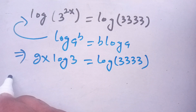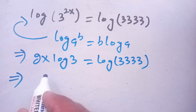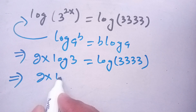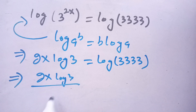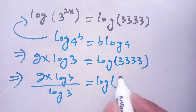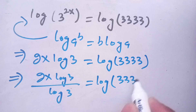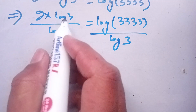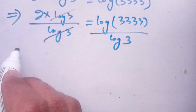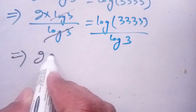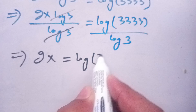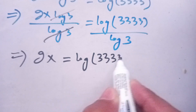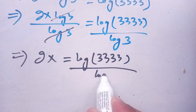Now, dividing both sides by log of 3, we get 2x times log of 3 divided by log of 3 is equal to log of 3333 divided by log of 3. We can cancel out log of 3, which gives 2x is equal to log of 3333 divided by log of 3.